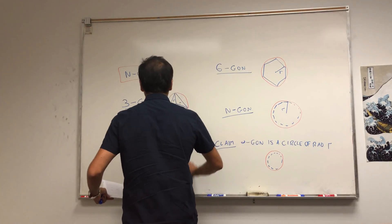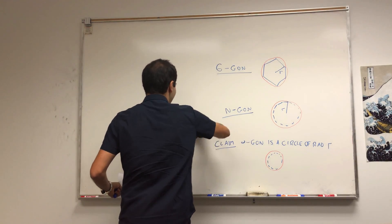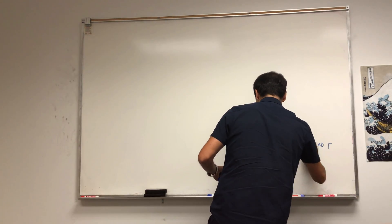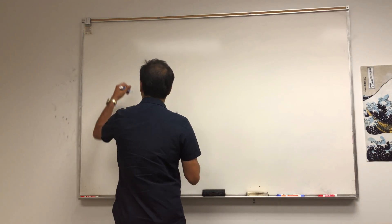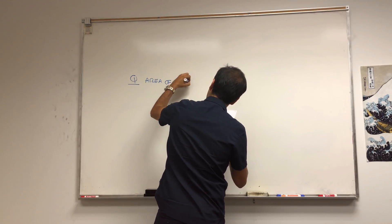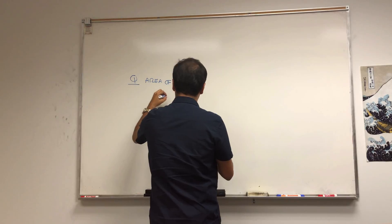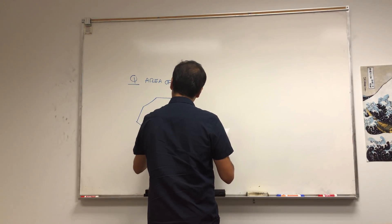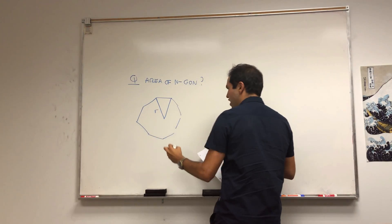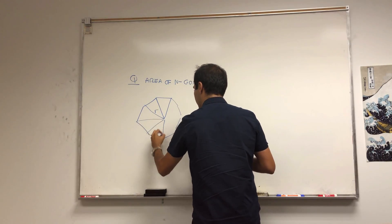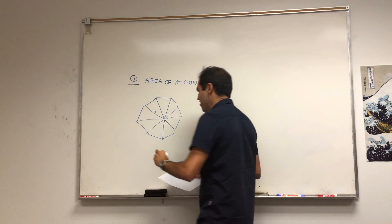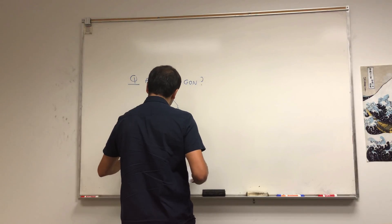In some sense we have convergence because the n-gon is always strictly inside the circle, so if the area of the n-gon goes to the area of the circle, the n-gon fills up the whole circle. And we can do this simply using calculus — no integration even required, just some limits. So the question is: what is the area of an n-gon?